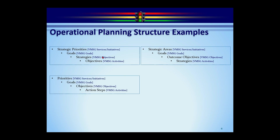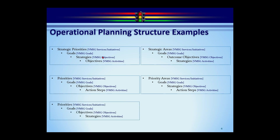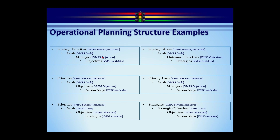Other common variations include: priorities, goals, objectives, and action steps — 'action steps' being the most common alternative to 'activities.' Another uses priority areas, goals, strategies at the objective level, and action steps. Yet another uses priorities, goals, objectives, and strategies. Strategic objectives is a term I like for goals — a higher-level objective. These are just some of the many examples we've seen.